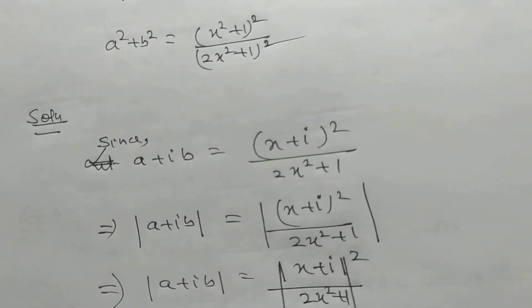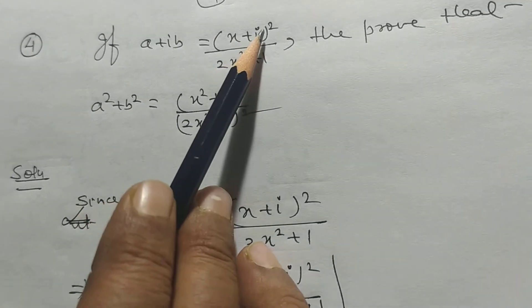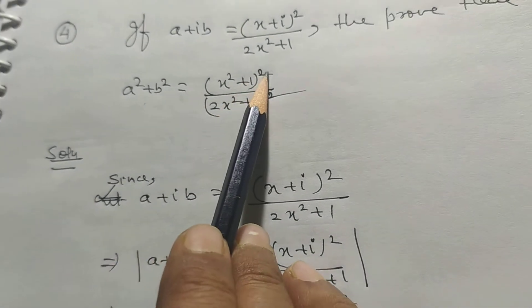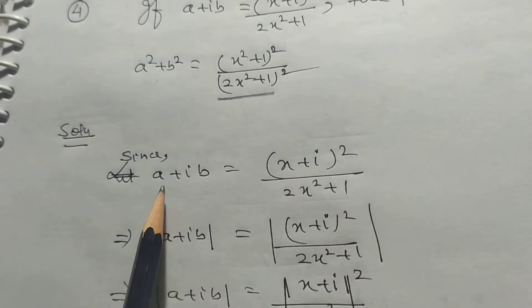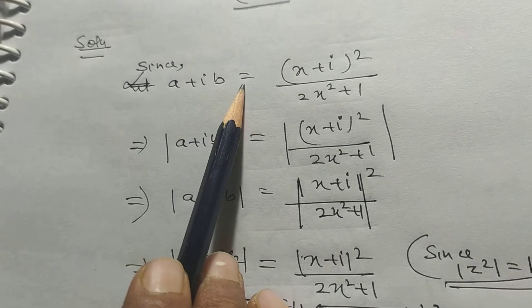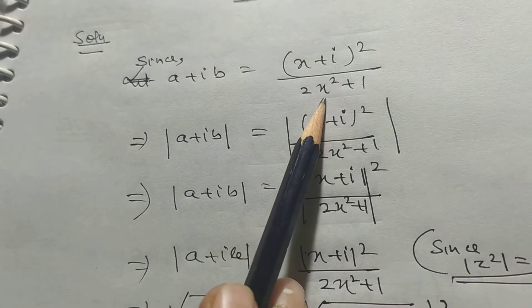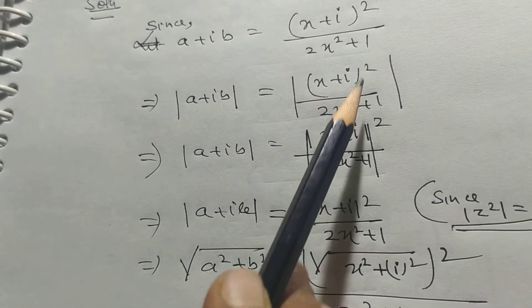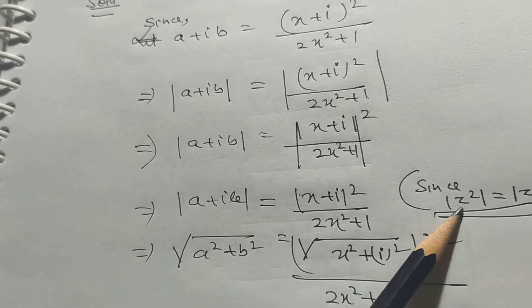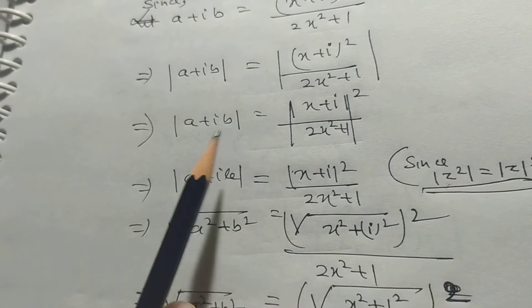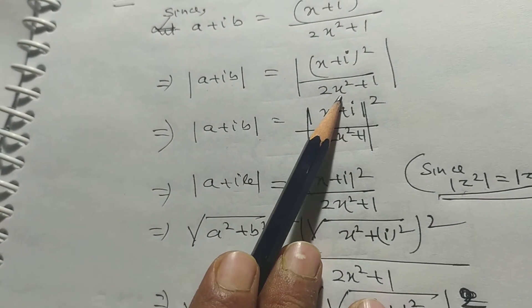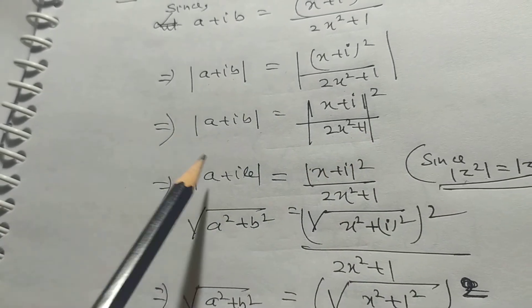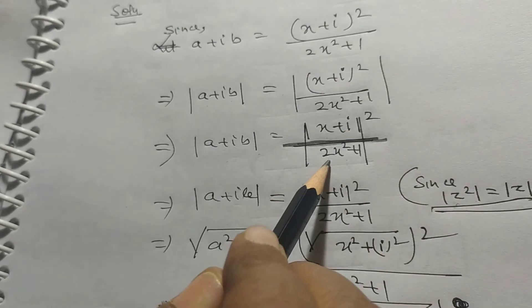Problem number 4: if a+ib = (x+i)²/(2x²+1), then prove that a²+b² = (x²+1)²/(2x²+1)². Since a+ib = (x+i)²/(2x²+1), taking modulus of both sides: |a+ib| = |(x+i)²|/|2x²+1|. Applying the formula |z²| = |z|², we get |a+ib| = |x+i|²/(2x²+1).